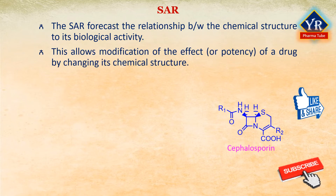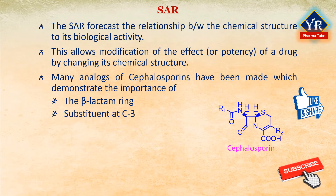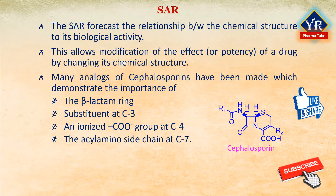This allows modification of the effect or the potency of a biological compound, typically a drug, by changing its chemical structure. Many analogues of cephalosporins have been made, which demonstrate the importance of the beta-lactam ring, a substituent at C3, an ionized carboxylate group at C4, and the acylamino side chain at C7.